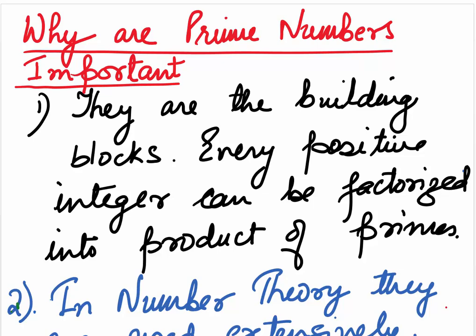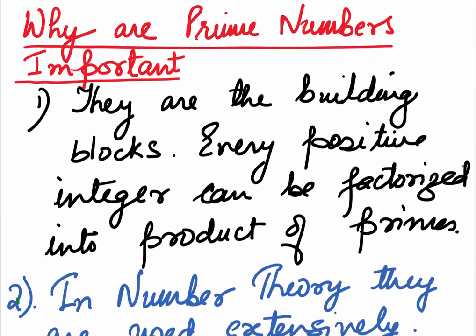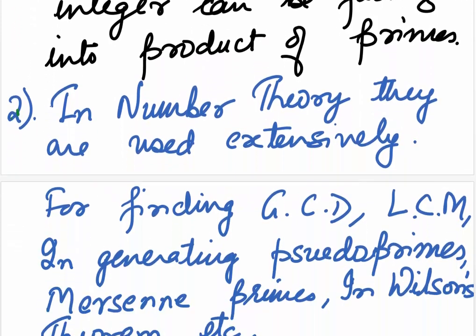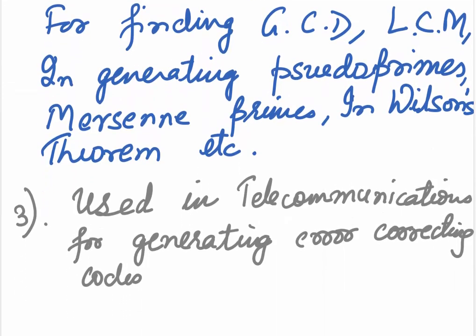So why are prime numbers important and where are they used? They are the building blocks. Every positive integer can be factorized into product of primes. So in other words, every integer is formed by the primes. In number theory, they are used for finding the GCD, LCM, in generating pseudo primes, for generating Mersenne primes, in Wilson's theorem, etc.